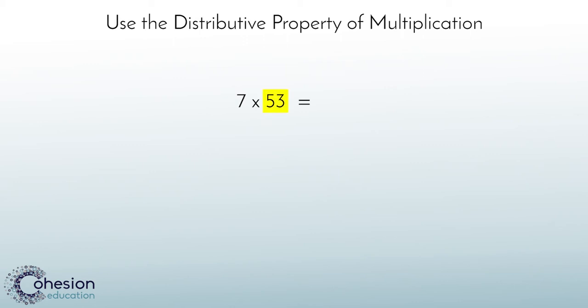We first want to break 53 into two smaller numbers. You should always choose two numbers that you can multiply easily. So we can take 53 and break it into 50 and 3. 50 is a good starting point because it ends in a zero and will make multiplying a large number simpler.